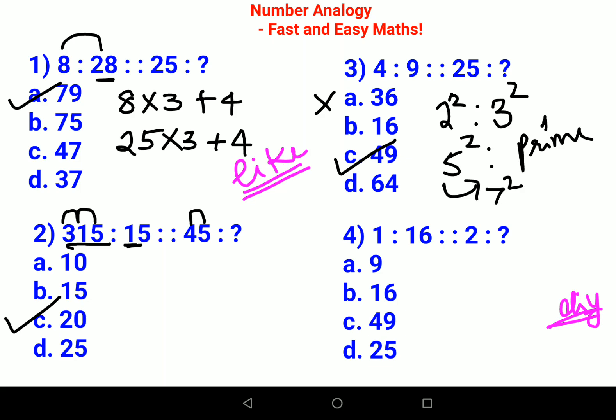Now the next one is 1 is to 16, then 2 is to what. If you look closely, whenever we have in the series numbers such as 1 and 0, it gets a bit difficult, but trust me it's not that difficult honestly. What you do is this is 4 square.